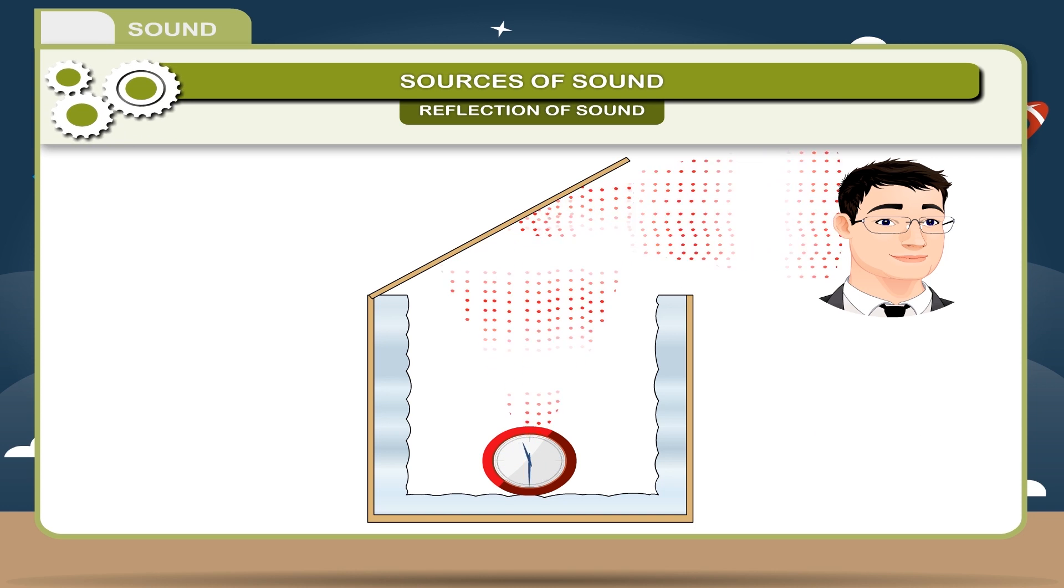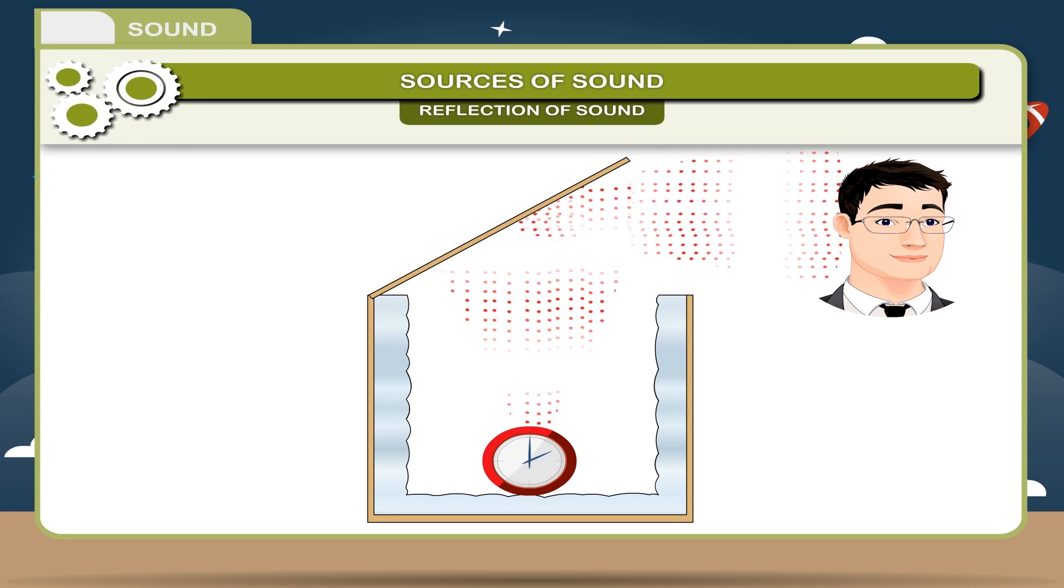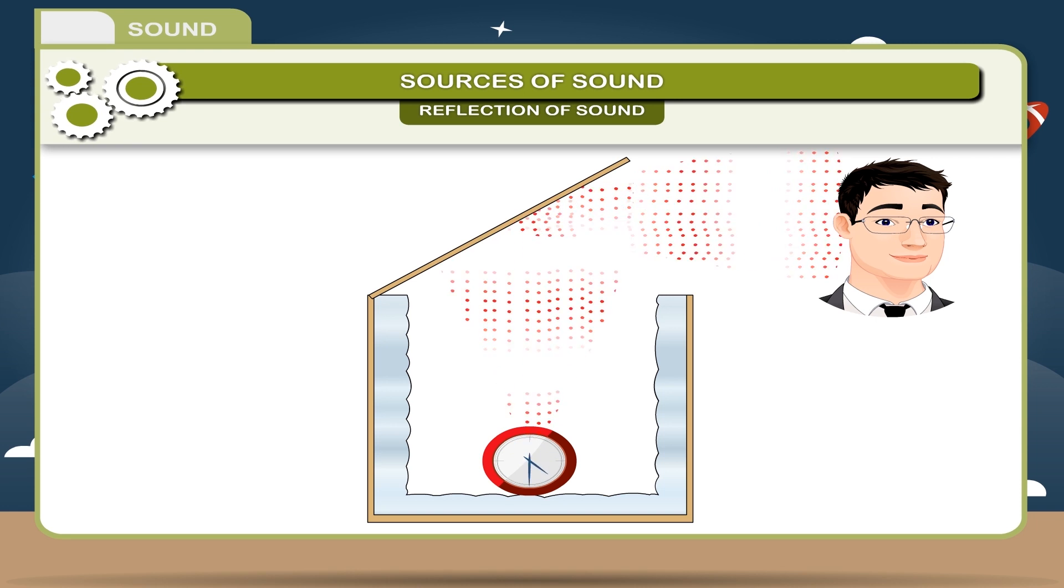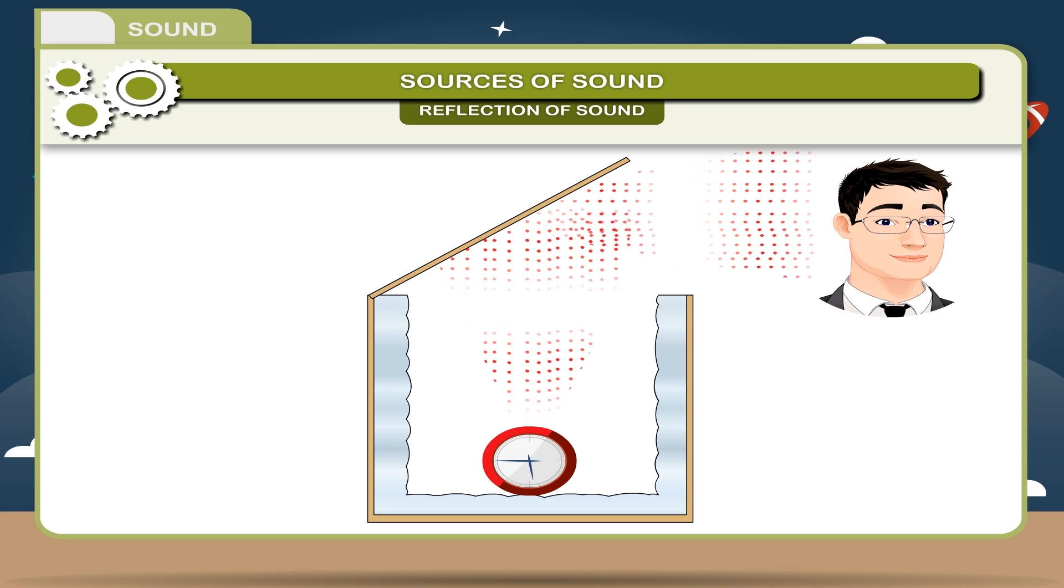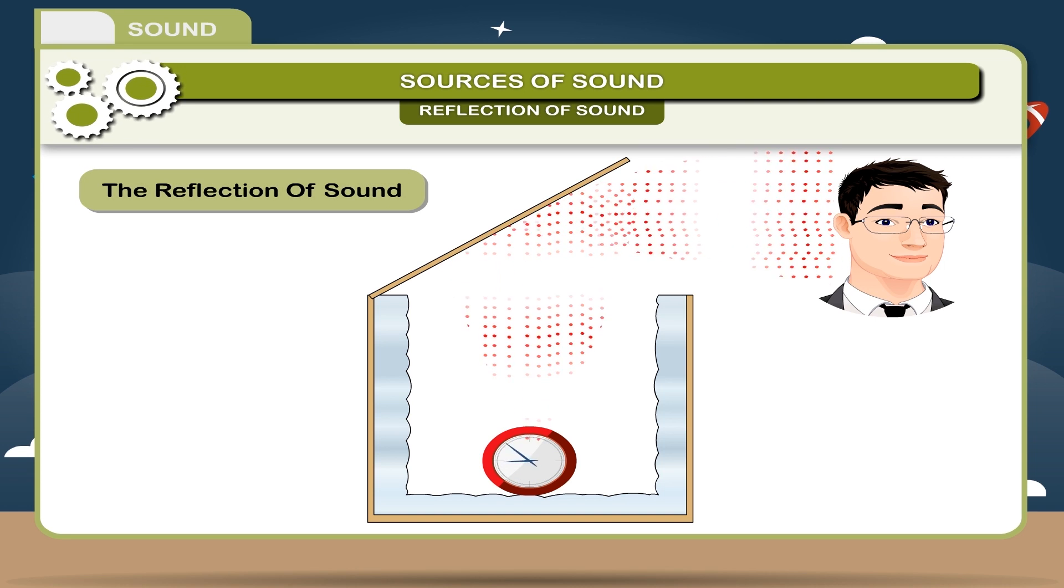This happens because the sound waves from the clock change direction, get reflected on striking the wooden lid at this angle, and your ear being along the same line of reflection, this sound can be heard more distinctly. This is called the reflection of sound.